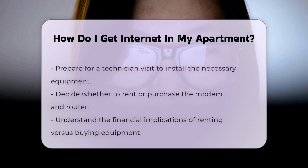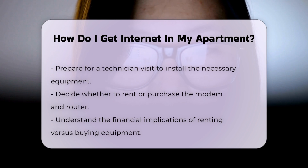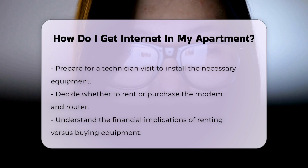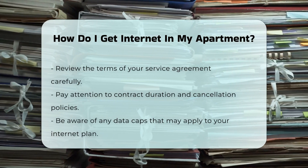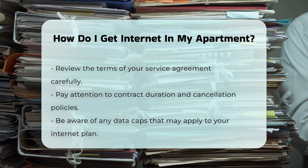After confirming availability, contact the provider to set up an installation appointment. This process may involve a technician visiting your apartment to install the necessary equipment. Consider whether you want to rent or buy the modem and router. Renting equipment may incur additional monthly fees, while purchasing it up front can save money in the long run.